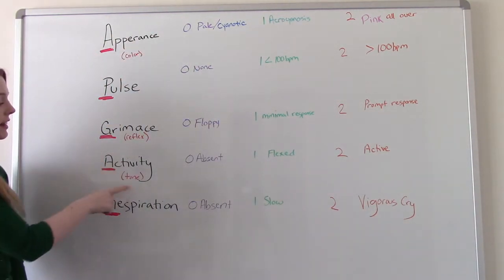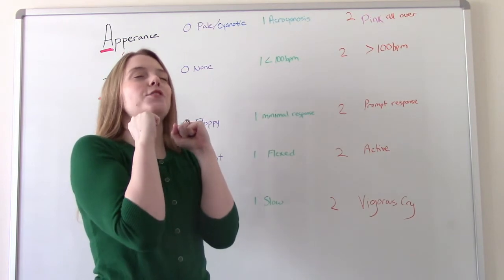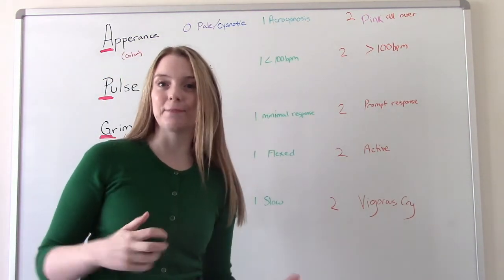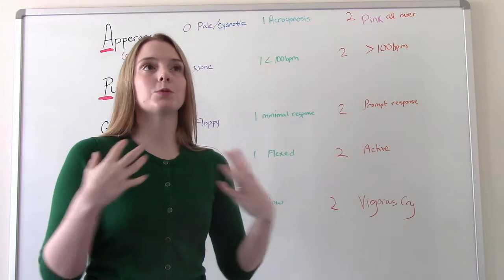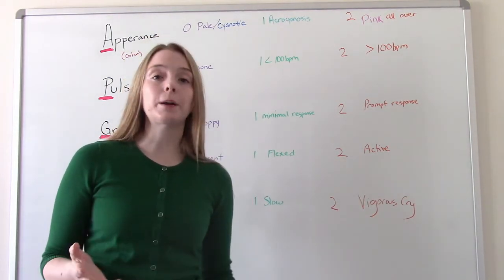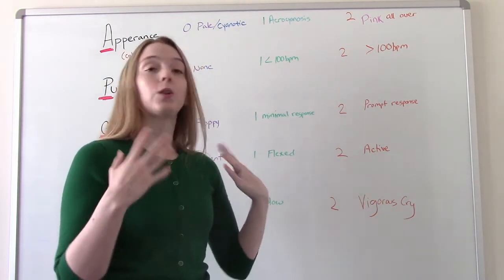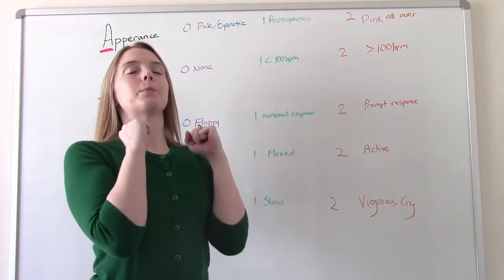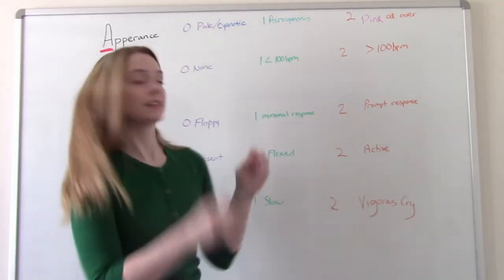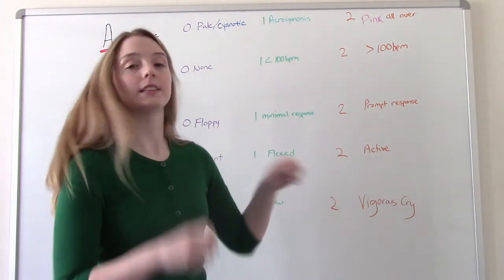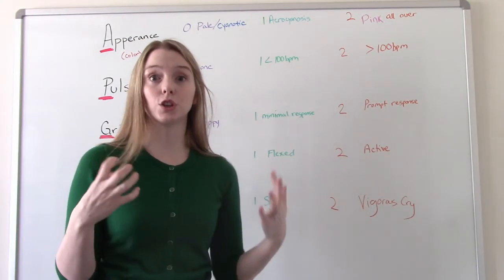A is for activity — this is muscle tone. Babies have a normal flexed resting posture, like the fetal position they've been in for nine months. You need some muscle tone to hold that posture. The more premature a baby, the less likely it is to have that muscle tone. A zero means no muscle tone at all. A one is that they're flexed. A two is active — not only can they maintain that position, but they can move their arms and legs. They have the strength and tone to do that.